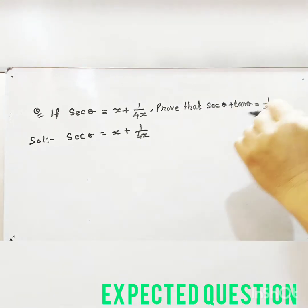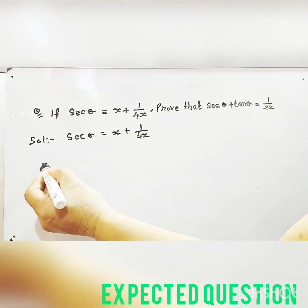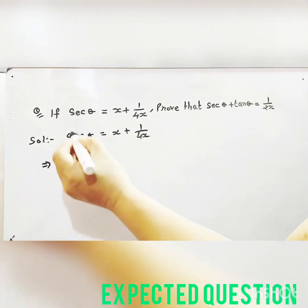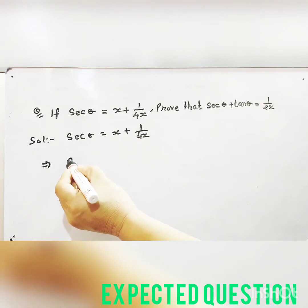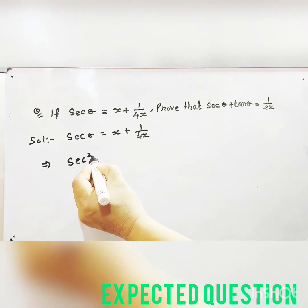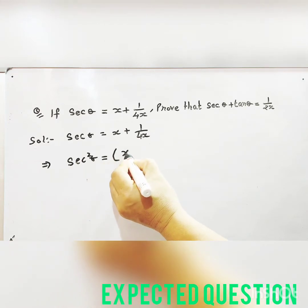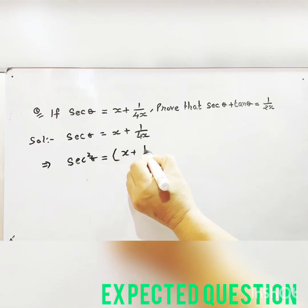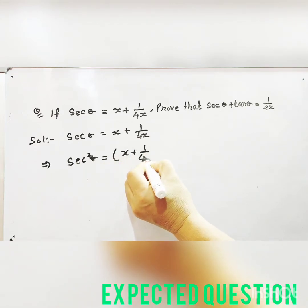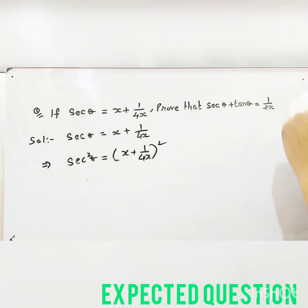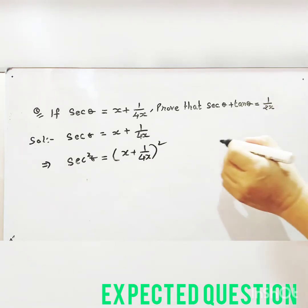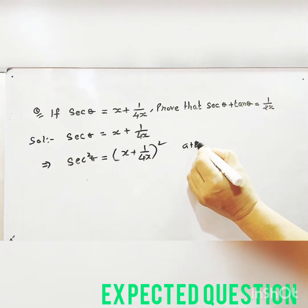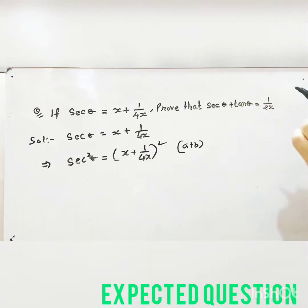Squaring both sides: sec square theta is equal to x plus 1 by 4x whole square. So we apply the formula a plus b whole square.